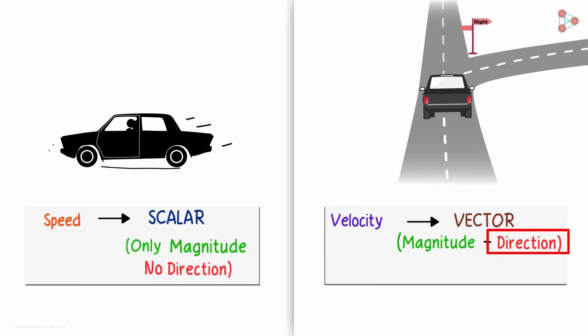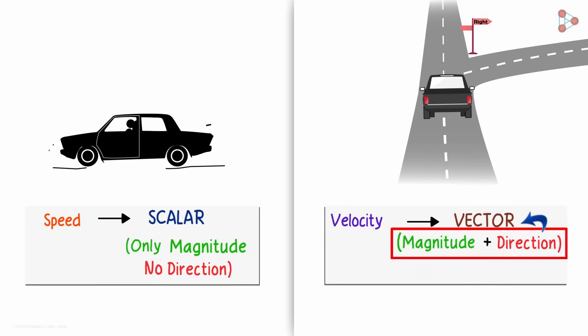When you add directional information to speed, it becomes a vector quantity called velocity. The additional information makes it more specific.